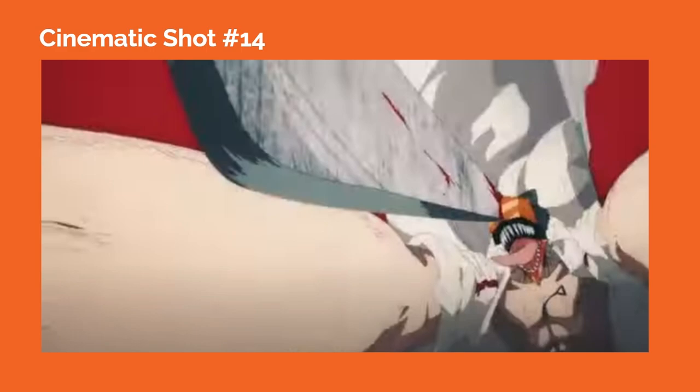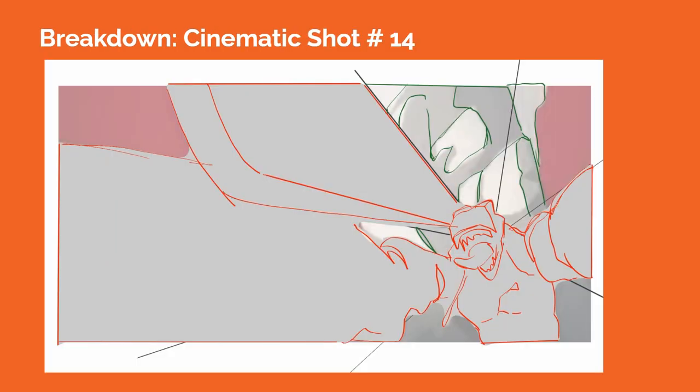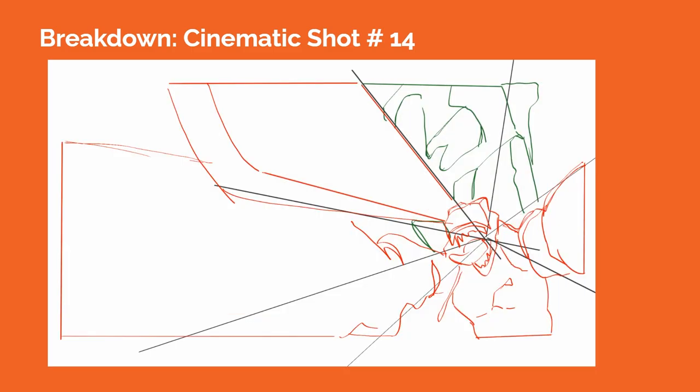In cinematic shot number fourteen, we see a shot with extreme perspective as Denji preps to attack the bat devil. Denji's arms and chainsaw blade are stretching toward the camera lens and are distorted in proportion, possibly indicating a wider camera lens being used. Denji is placed in the lower right corner of the frame to give enough room to stage the extreme perspective of his arms and the chainsaw blade. This extreme perspective creates a heightened sense of dynamic action and urgency that creates tone and atmosphere for the fight.